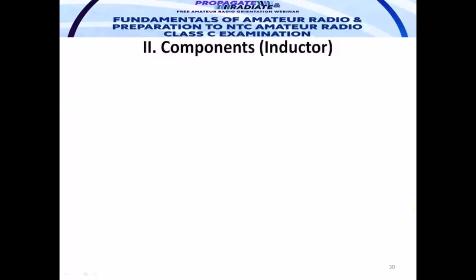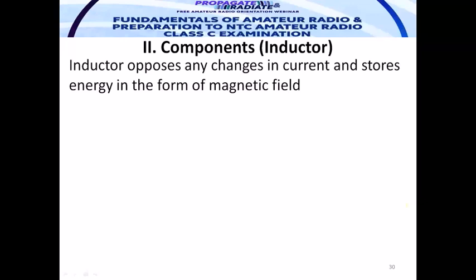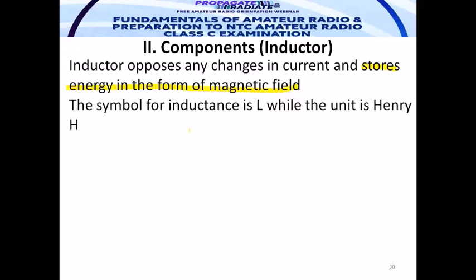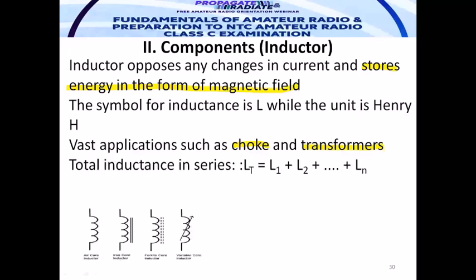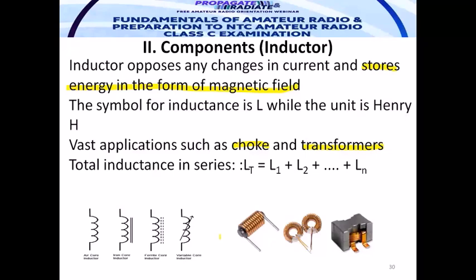Another component: the inductor. The inductor stores electrical energy in the form of a magnetic field. The symbol of inductance is L; the unit is the Henry. You can see the inductor in the choke coil — technicians commonly call the inductor a choke — and in a transformer. Simply put, an inductor is a coil. One coil of a transformer is actually an inductor.